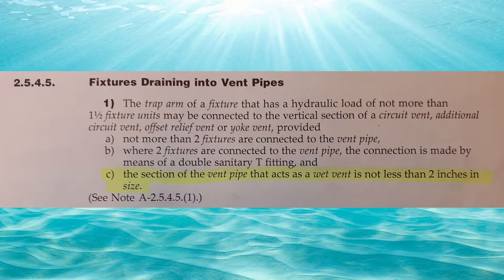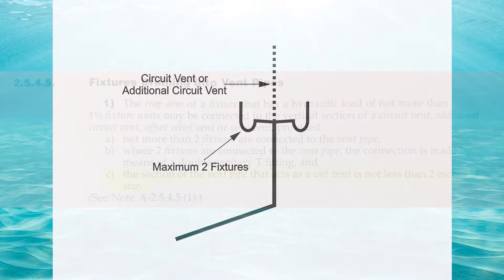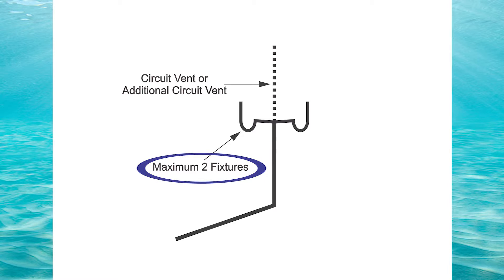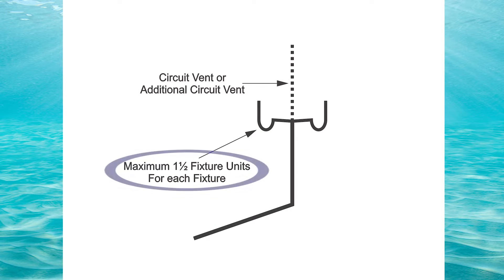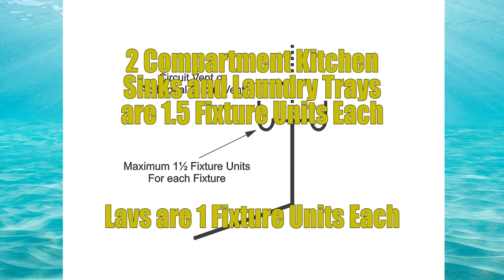Clause 2545: the trap arm of a fixture that has a hydraulic load of not more than 1.5 fixture units may be connected to the vertical section of a circuit vent, additional circuit vent, offset relief vent, or yoke vent, provided: Part A — not more than two fixtures are connected to the vent pipe. So we're allowed to have up to one or two fixtures, maximum 1.5 fixture units each. A good example would be a two-compartment kitchen sink or a laundry tray. A lav is one fixture unit, so we could have two lavs — no problem.